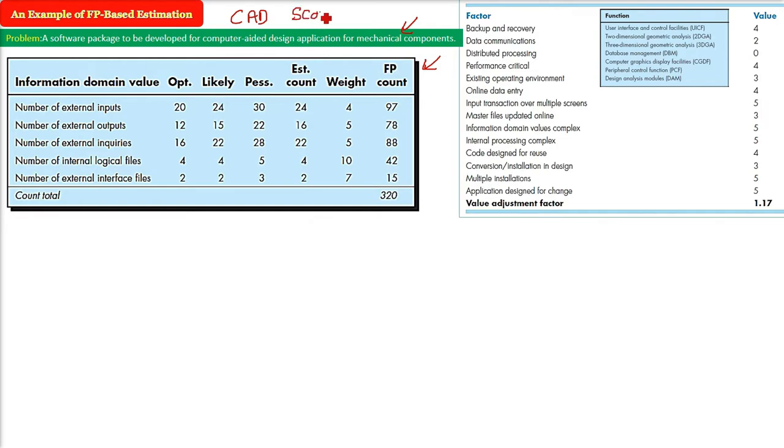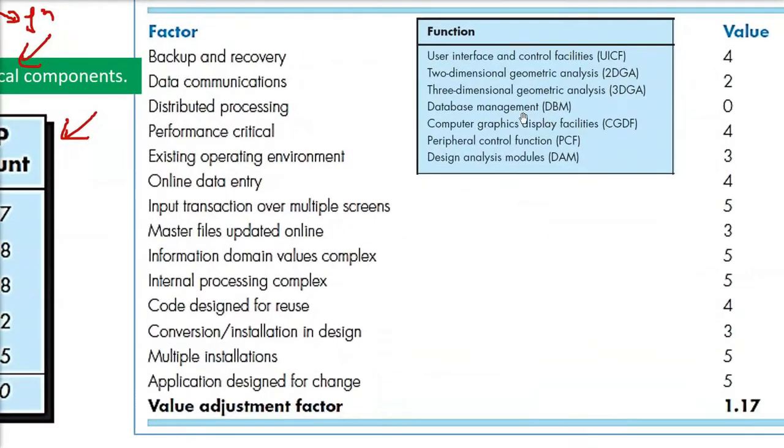So first we write the scope, all the statements, we bound it and we refine it and try to take out the functions which we have to make. The certain functions we have taken out from the project scope. So these functions we have decided, these are the functions I am talking about. That is you have to make a user interface, 2D geometric analysis, 3D geometric analysis.